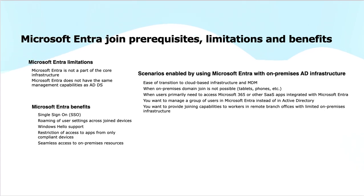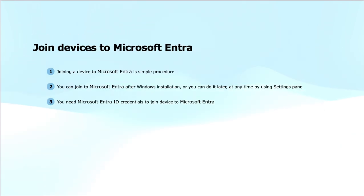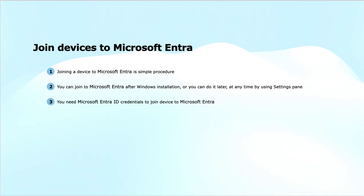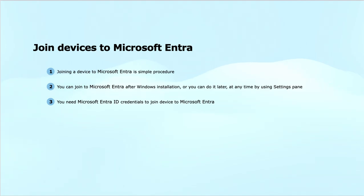Joining devices to Microsoft Entra is a quite simple process. For users, you can join Microsoft Entra after Windows installation or at any time later from the Settings app. You need Microsoft Entra credentials — your work or school account — and a setting enabled by the administrator to let users join devices. Alternatively, we can set up device enrollment agents that are responsible for joining devices to Entra ID.